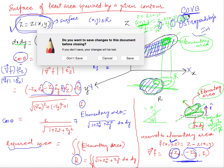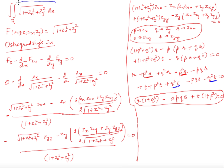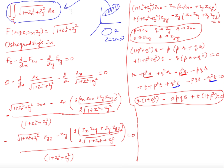So we have this surface area: the double integral over R of sqrt(1 + z_x² + z_y²) dxdy. This is our functional, and we want to find the function z = z(x,y) such that this area is minimum. Since z is a function of two variables, we need to apply Ostrogradsky's equation.